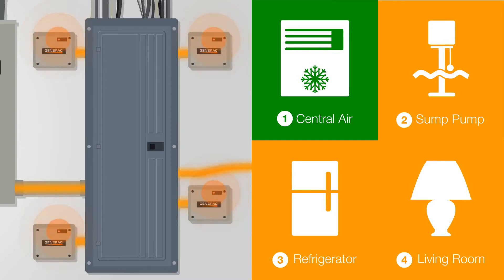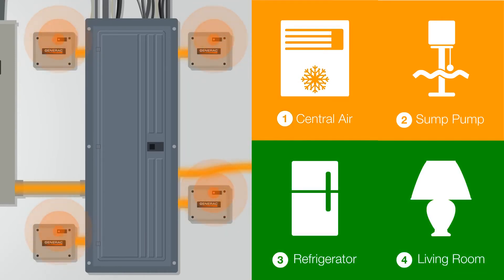It will provide electricity to the highest priority circuits as selected by the homeowner and once that demand is taken care of, it will then provide power to the lower priority appliances as well, automatically.